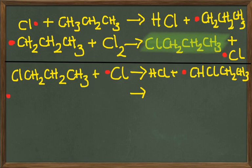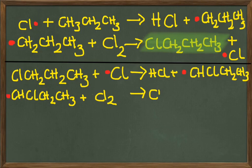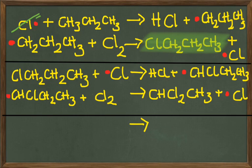So that chloropropane reacts with another chlorine radical to make hydrochloric acid and the chloropropyl radical. This chloropropyl radical then goes to react with a new molecule of chlorine to make the 1,1-dichloropropane and chlorine radical.